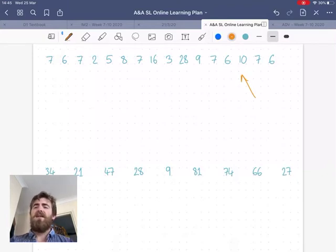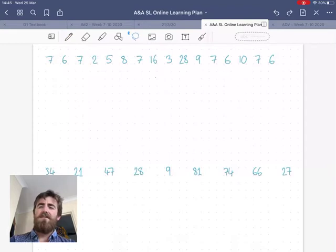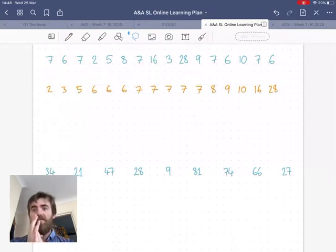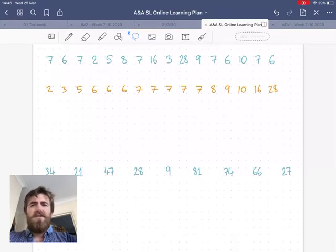That says how spread out the whole data is, but really 28 is a bit of an outlier, and nearly all of the data is six, seven, eight, nine - that kind of thing. So most of the data isn't that spread out, yet the range tells us it's 26 spread out. Is there another way? Well, yes, that's what we're going to do now.